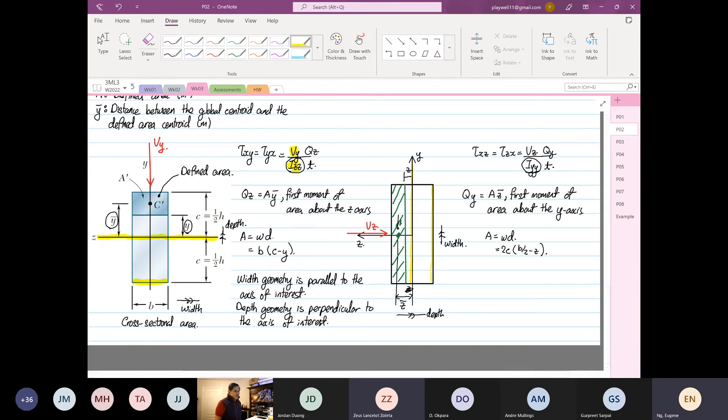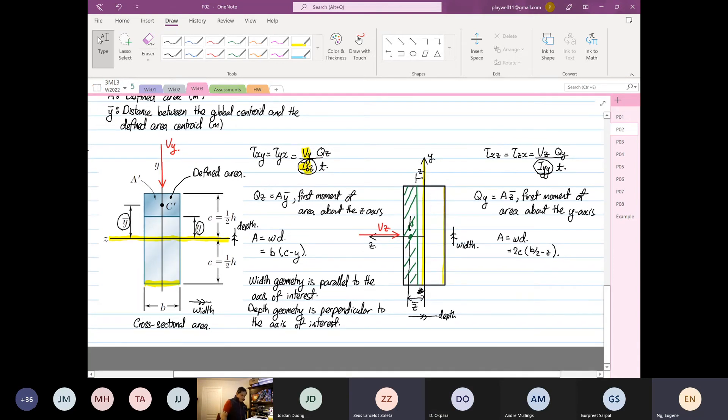I just repeat what Gizel Jonas wants. Please repeat again. So Z is on the left-hand side. Z, Z is our interest. Any geometry that is parallel to the axis, it's going to be the width. A perpendicular is going to be the depth. On the right-hand side, YY is the axis of interest. So anything that's parallel is the width. Any geometry that's perpendicular is the depth. Makes sense.